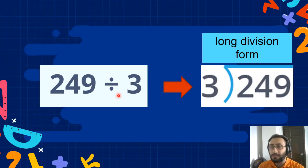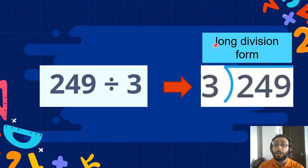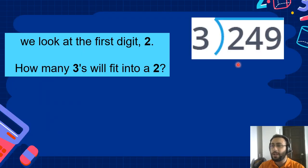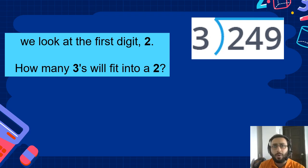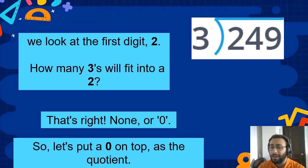249 divided by 3. We write it like this — this is called long division form. So we look at the first digit, 2. How many 3's fit into 2? We cannot fit 3 into 2.